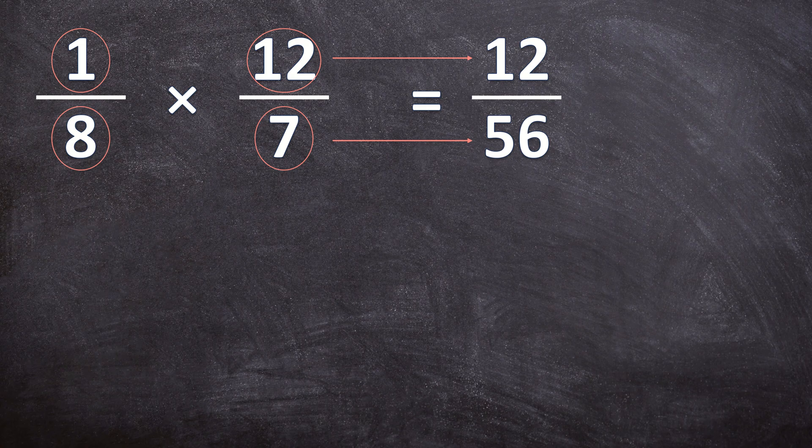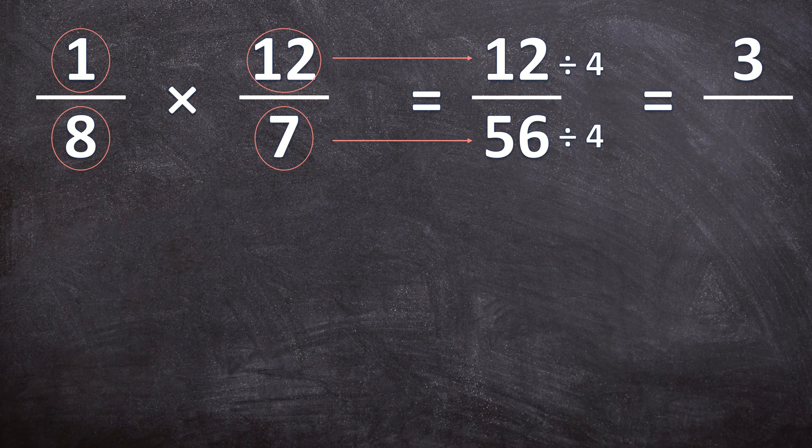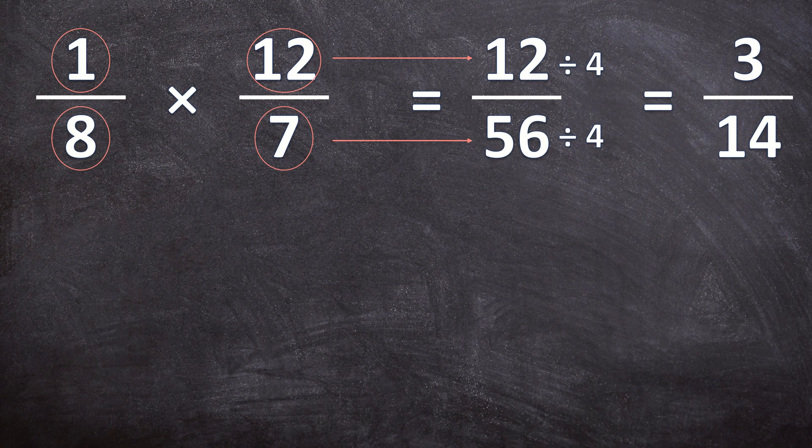But let's have a look at this fraction. We need to get the greatest common factor for the 12 and the 56. And the greatest common factor between them both is 4. So I'm going to divide the 12 and the 56 by 4. And 12 divided by 4 is 3 over 56 divided by 4 is 14. And as you can see, this fraction can't be simplified anymore. This is my final answer.